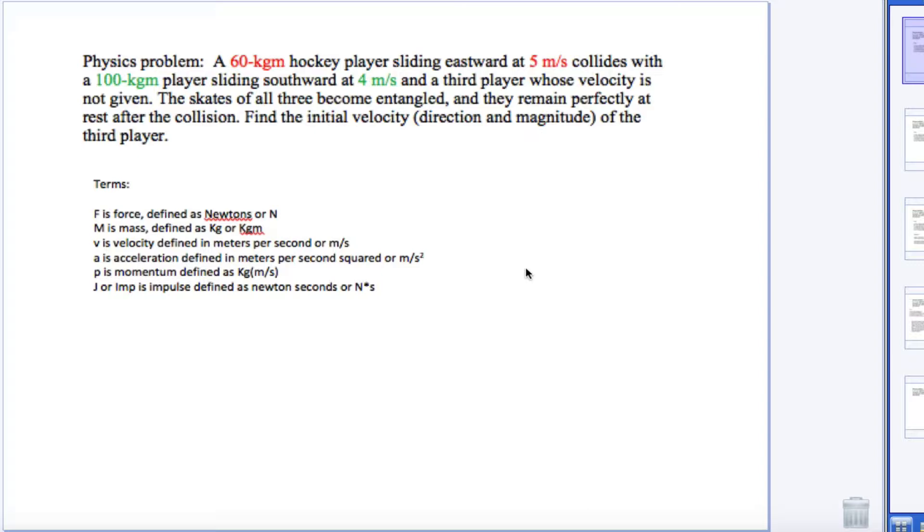The skates on all three become entangled. They remained perfectly at rest after the collision, so they crash into each other and all of them stop completely at the point of collision. You need to find the velocity, magnitude, and direction of the third player.